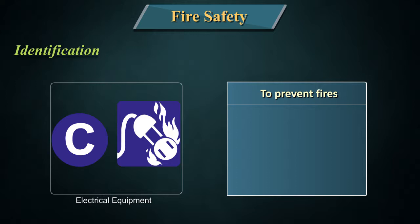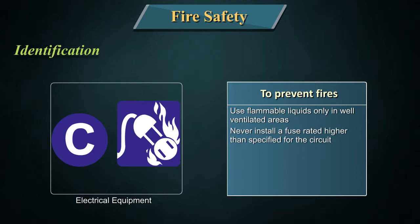Symbol for electrical equipment: Extinguishers for Class C fires are identified by a circle containing the letter C. If coloured, the circle is blue. To prevent fires: use flammable liquids only in well-ventilated areas. Never install a fuse rated higher than specified for the circuit. Investigate any appliance or electrical equipment that smells strange.